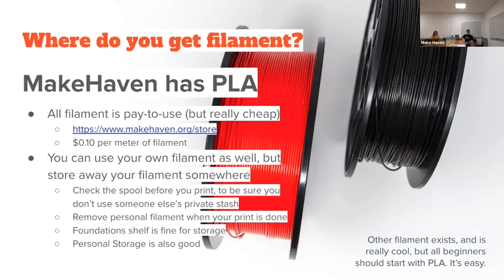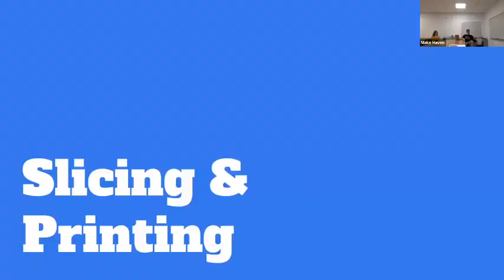PLA is what we use. ABS — essentially the plastic everything is made of — is incredibly strong and versatile but won't work on the printers downstairs; they don't get hot enough to melt it, and ABS requires specific conditions to print properly. Don't buy spools of ABS. Stick to PLA, but note there can be many color effects and even metal-reinforced or metal-sparkle types of PLA filaments.